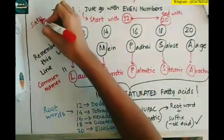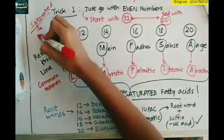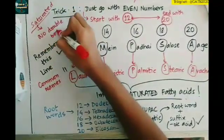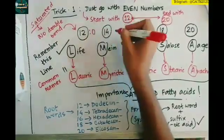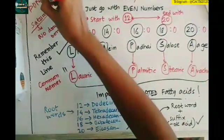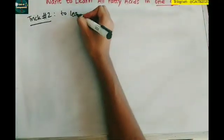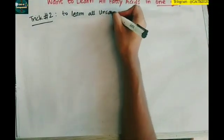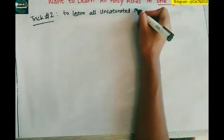Saturated fatty acids, you have learned all of them. Just remember one thing: there is no double bond, so while abbreviating them you just have to separate it with the colon and write zero. Now trick two to learn all the unsaturated fatty acids.